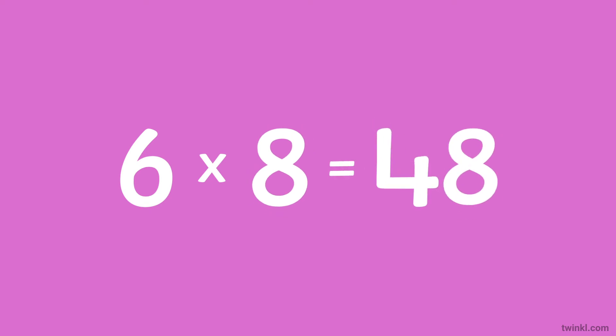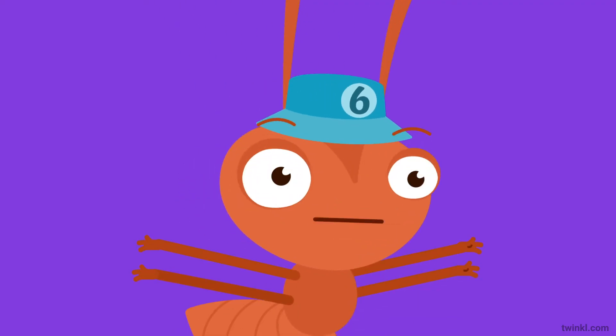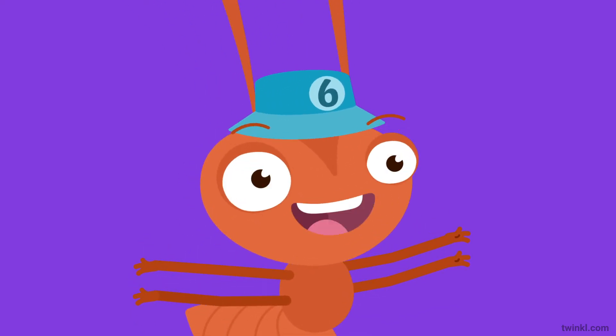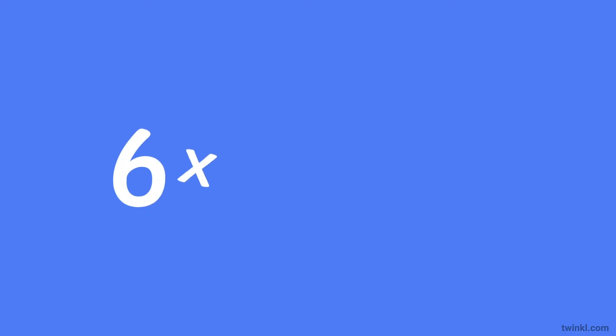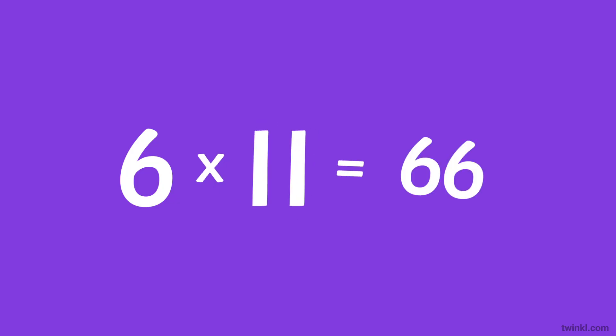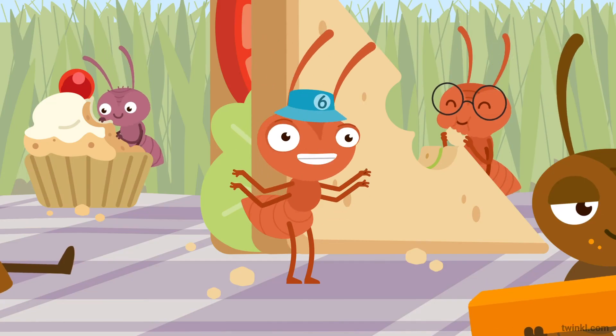Six times seven is forty-two. Six times eight is forty-eight. Six times nine is fifty-four. We've only got a few more. Six times ten is sixty. Six times eleven is sixty-six. Six times twelve is seventy-two. It's times by six and it's thanks to you.